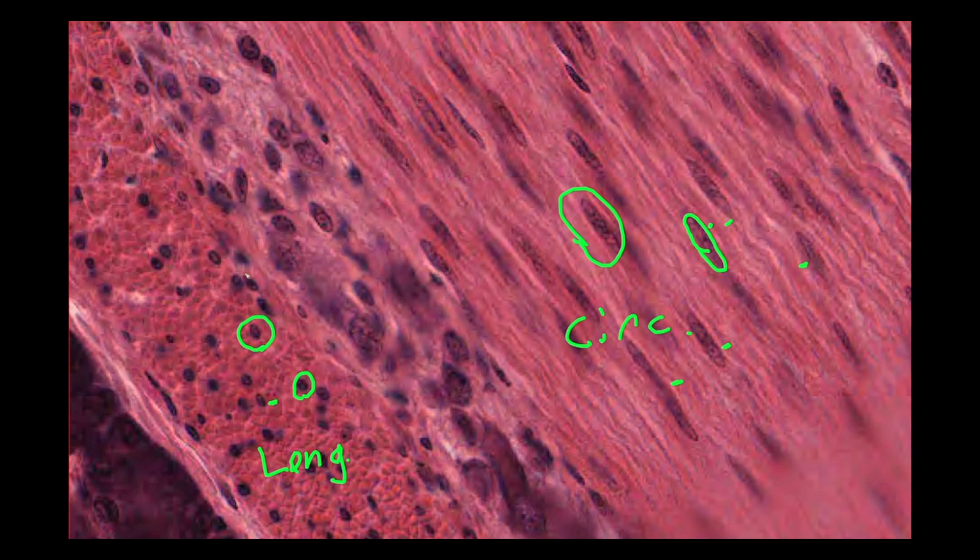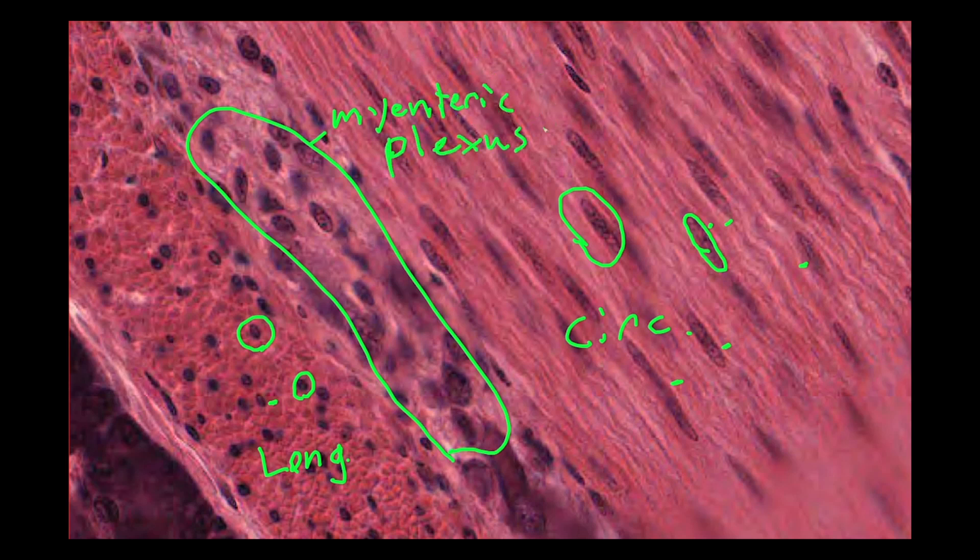This is in the GI tract. The cool part about this slide is this right here. This is called the myenteric plexus or Auerbach's plexus. This makes sense since we were talking about smooth muscle and how it's controlled by the autonomic nervous system. Right in between these two layers, we have the autonomic nervous system. These are neurons, post-ganglionic neurons of the autonomic nervous system. When these control the contraction of these muscles, it makes sense because it's right in between those two.